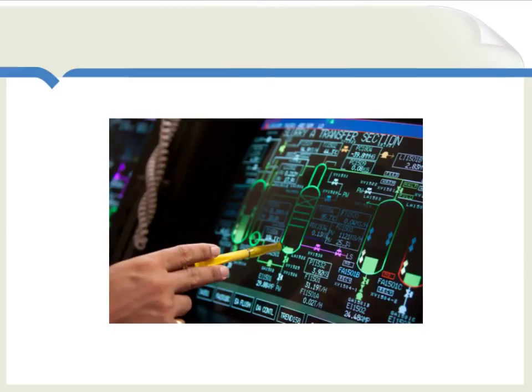The Mises-Hayek argument was that businesses need access to market prices to determine which courses of action are profitable and which are not profitable and thus should not be pursued. To put this in the context of a concrete example, imagine a business which is considering investing in a new computer system. This new computer system will make the factory safer, but there's still the question of whether it is worth the money.